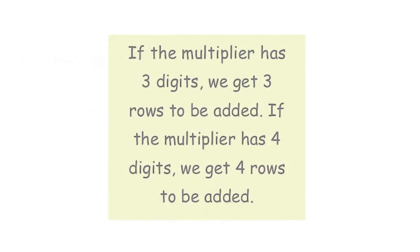Remember, if the multiplier has 3 digits — like 134 — you get 3 rows to add. If the multiplier has 4 digits, you get 4 rows to add.